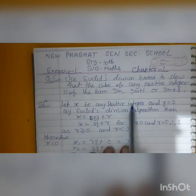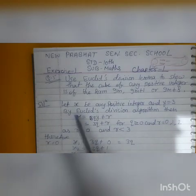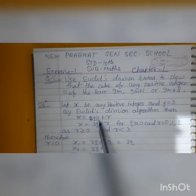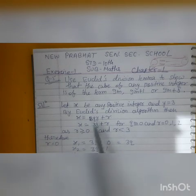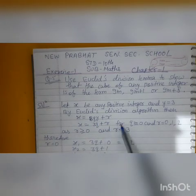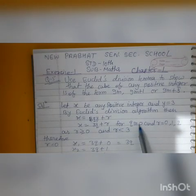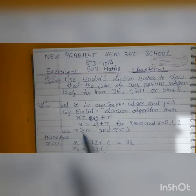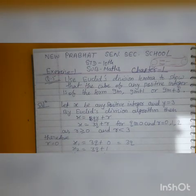Let x be any positive integer and y is equal to 3. By Euclid's division algorithm, x equals qy plus r. From q we have always greater than 0 and r is equal to 0, 1, 2, as r is greater than 0 and r is less than 3.